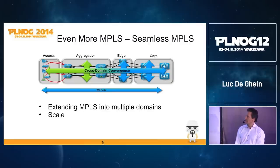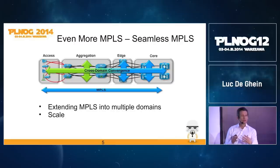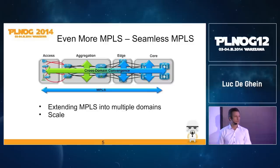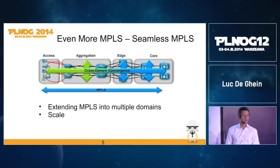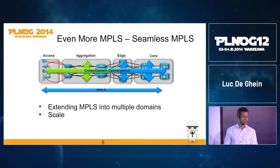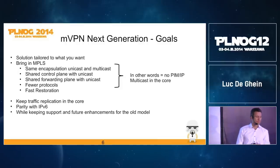Another area where MPLS is gaining traction is seamless MPLS or unified MPLS, where MPLS runs not just in the core of a service provider network but also widens into the aggregation or distribution part of the network. A typical example is mobile networks, where MPLS increasingly goes into the aggregation layer. So MPLS VPN — both layer 2 and layer 3 — is still getting a lot of traction and growing strongly.